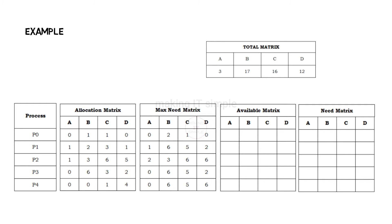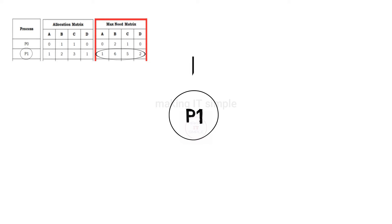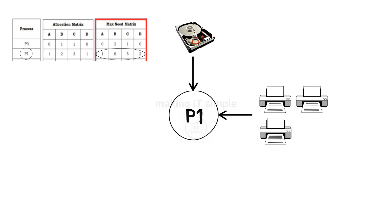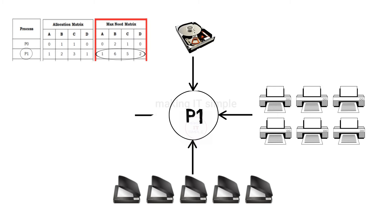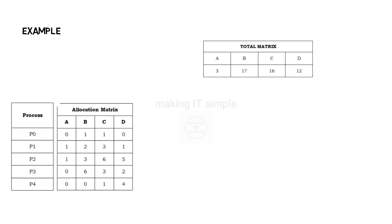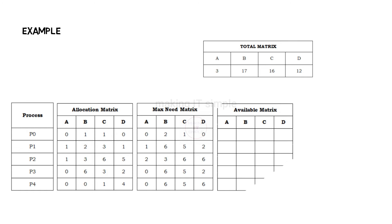This here is the maximum need matrix. In this matrix, how much of each resource each process could possibly request in its lifetime to complete execution is given. For example, process P1 will require 1 hard disk, 6 printers, 5 scanners, and 2 pen drives to complete its execution. Similarly, the maximum possible need of each process is defined in this matrix.